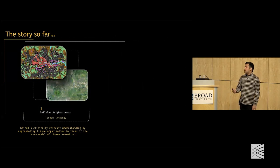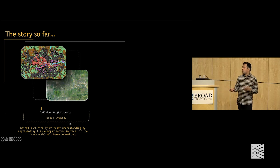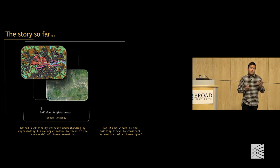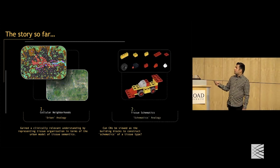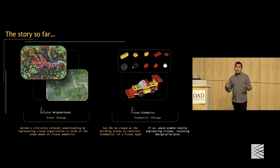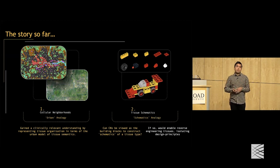The story so far is that we used this urban analogy and gained clinically relevant understanding using this model for tissue semantics. That raised the question: maybe there are other models for tissue semantics that could be useful. Can CNs be viewed as building blocks to construct schematics of a tissue type? That's this analogy where you have different parts and a schematic showing how to build structures. Having a schematic would enable reverse engineering tissues and isolating their design principles.